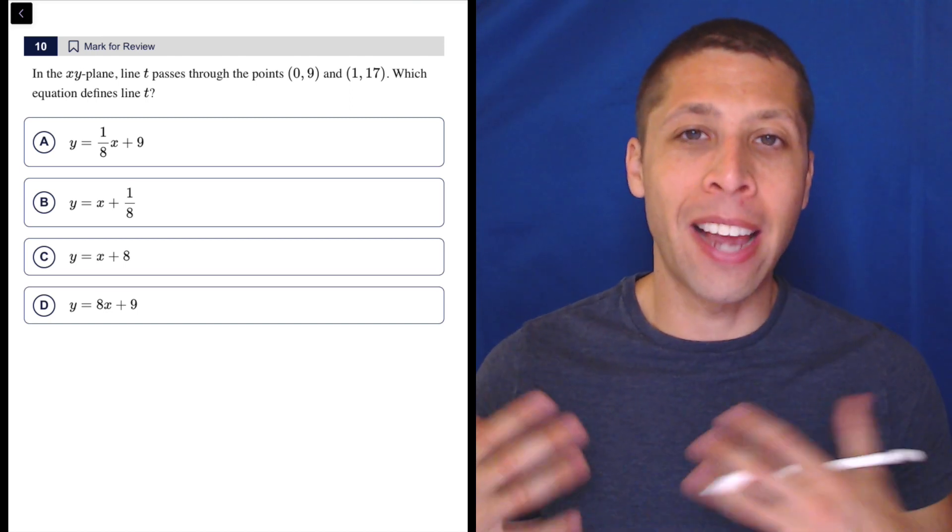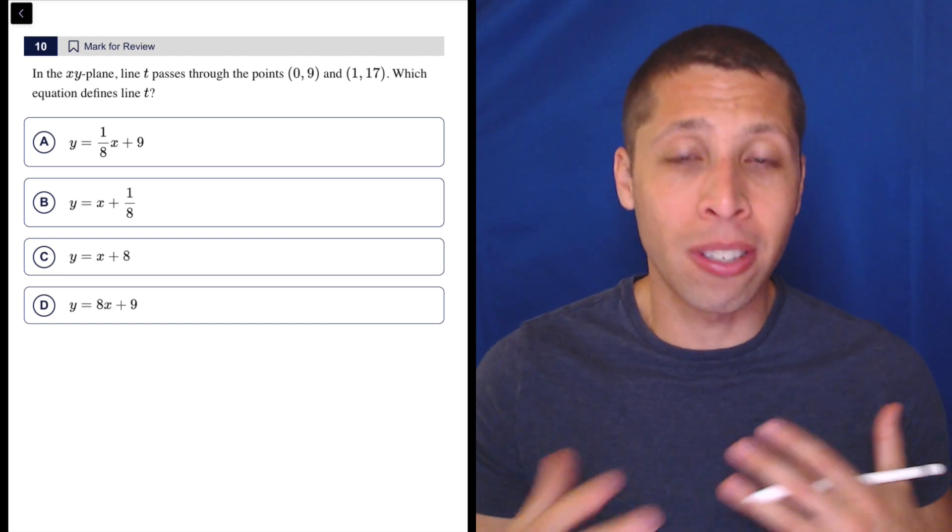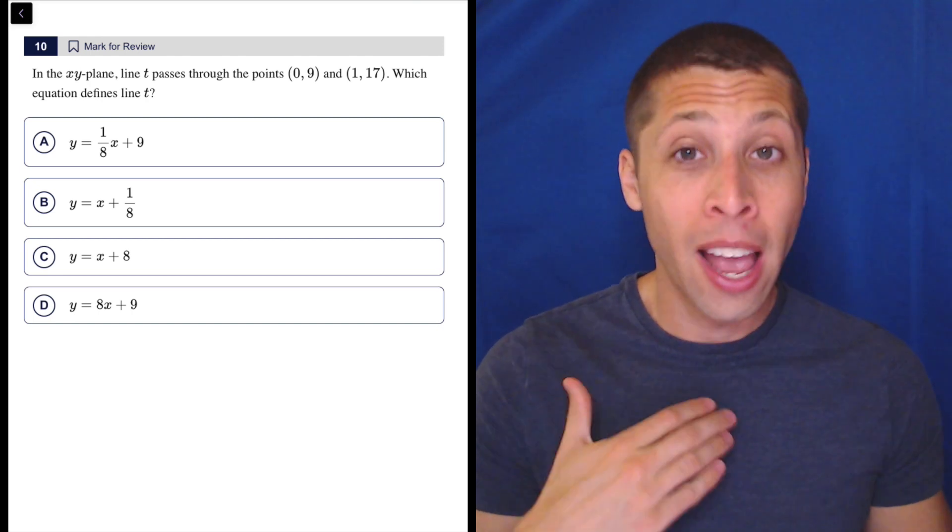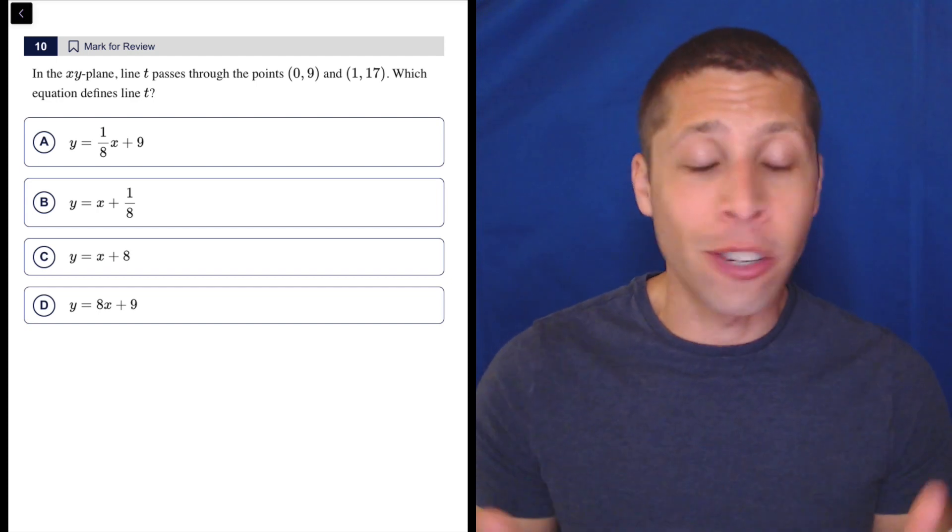But the slope formula is inherently kind of risky. It's got lots of negatives, there's fractions, things have to go in very particular places. And if you mess that up, then that's it. You're going to get the question wrong.